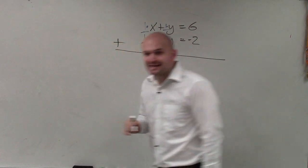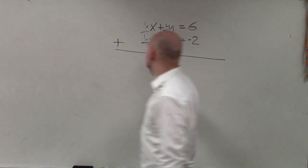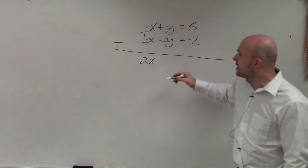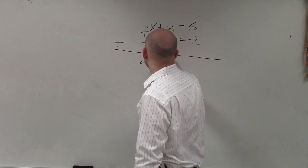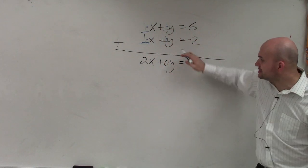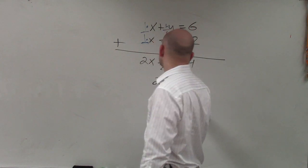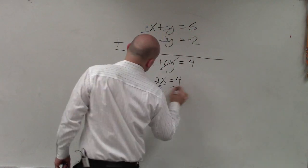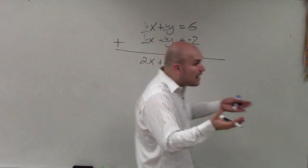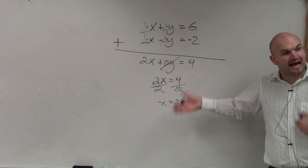If I'm going to add the two equations, we just add vertically. x plus x is 2x. 1y minus 1y is going to be 0y, equals 4. Obviously, 0 times y is just 0. So I have 2x equals 4. Divide by 2, x equals 2. So now I know that the value of my solution for x is 2.